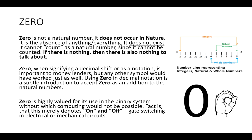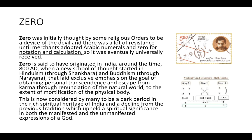Some might argue that zero is highly valued for its use in the binary system, without which computing would not be possible. But the fact of the matter is that it's just an on-and-off switch for gate switching in electrical or mechanical circuits — it's not a thing in itself. Zero was initially thought to be a device of the devil, and there was a lot of resistance until merchants adopted Arabic numerals and zero for notation and calculation, which is how it became more widespread.